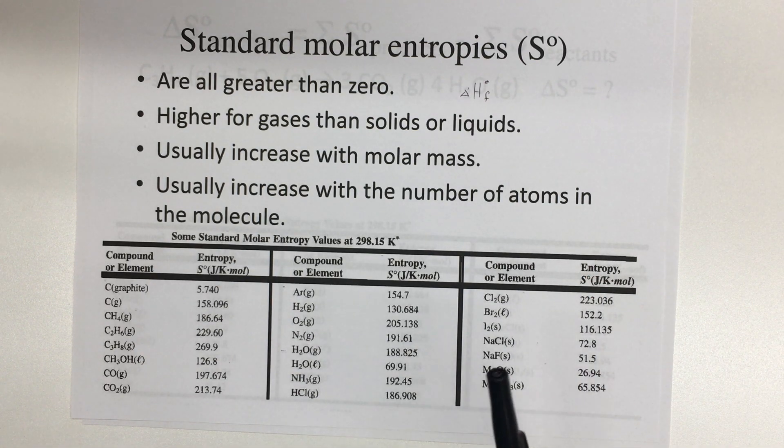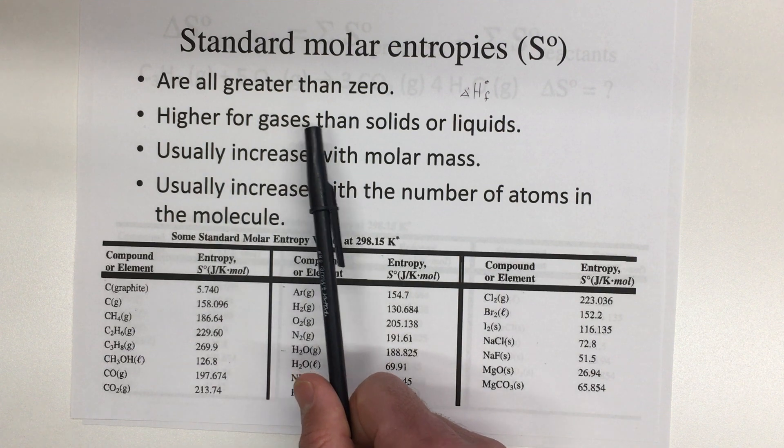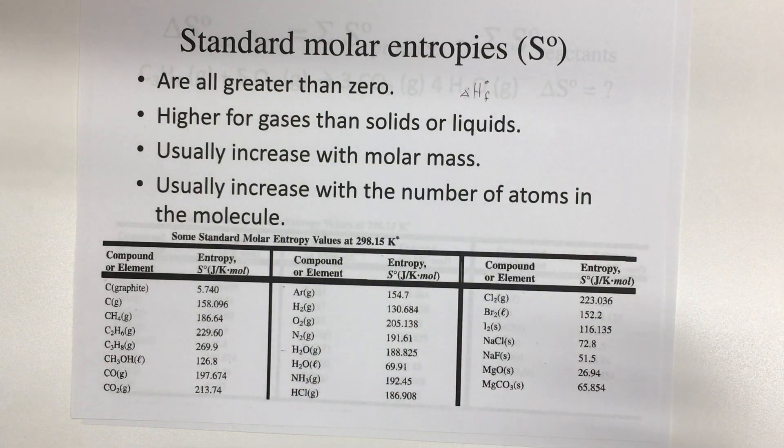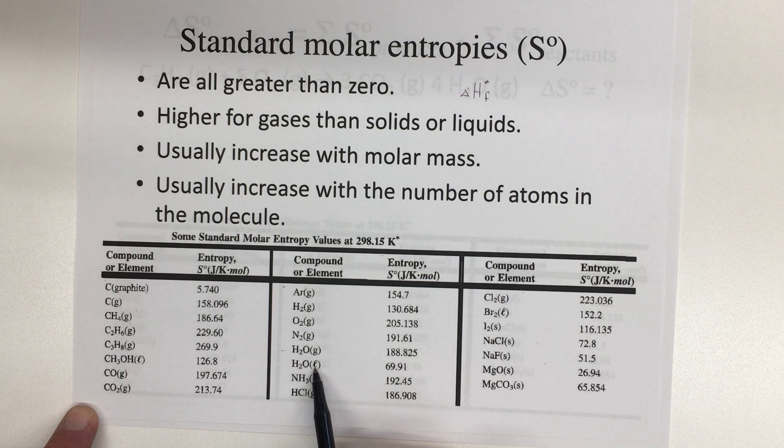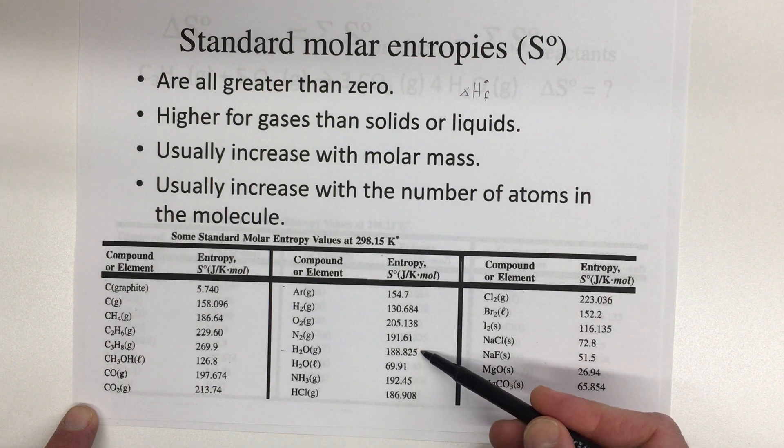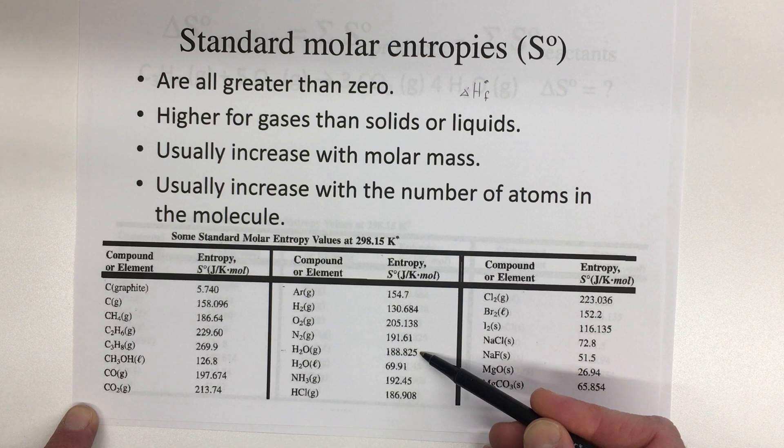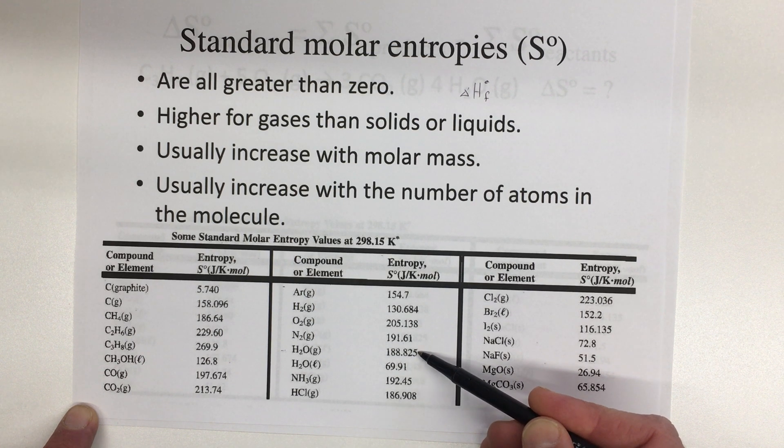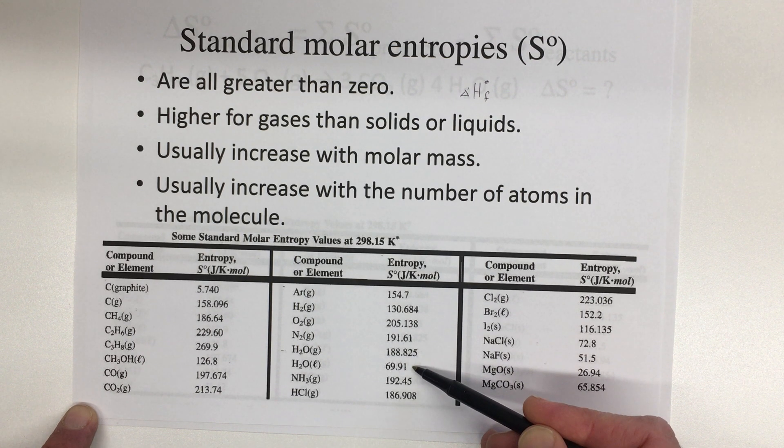The other thing we can notice looking at these values is that they're higher for gases than solids or liquids. That makes sense. We talked in our last video about how gases have the highest entropy. And so if we look here at water, here's water as a liquid, there's its value, and you can see it's significantly higher for water as a gas. So we have a much bigger value for water as a gas because there's a lot more disorder, a lot more randomness, a higher entropy for water as a gas than as a liquid.